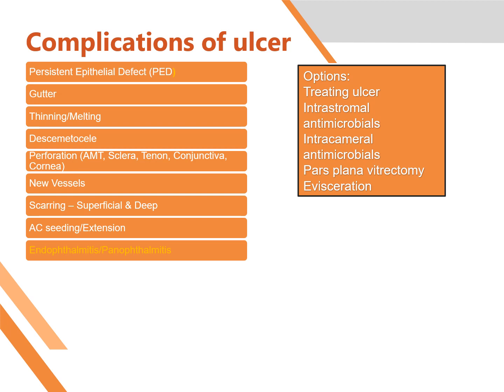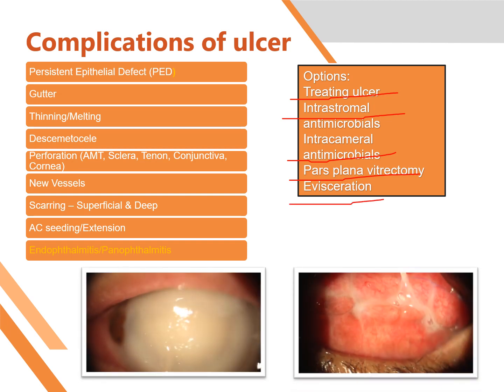Then there is endophthalmitis, which means the infection has spread into the eye including the vitreous cavity. You treat the ulcer, perform intra-stromal injections, intracameral antibiotics, pars plana vitrectomy, and evisceration. In this patient, the ulcer was too severe and extending into the eye, so we performed evisceration — removal of the eye contents leaving only the sclera behind.